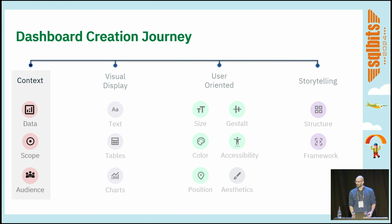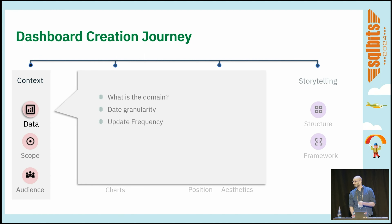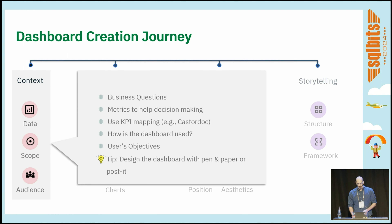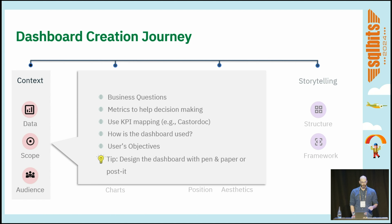Let's start with the context part — it's all about data. We have to keep in mind what kind of data we have: what's the domain, is it purely marketing or sales data, or a mix? What kind of data granularity do we have? That's quite important for building the infrastructure later on. And what kind of update frequency are we aiming for? We should also keep in mind the scope: what business questions do we need to answer via the report, and design the metrics to facilitate decision making. A good practice is to use KPI mappings — a nice template I use is provided by CasterDoc, it's Figma-based, very well organized and useful.